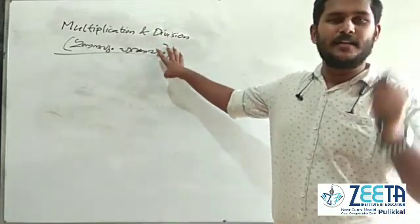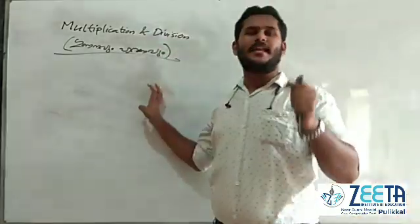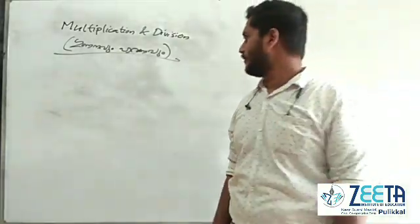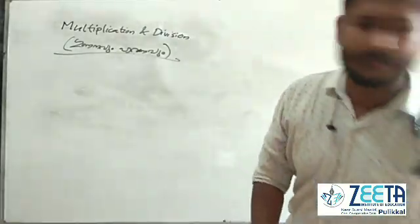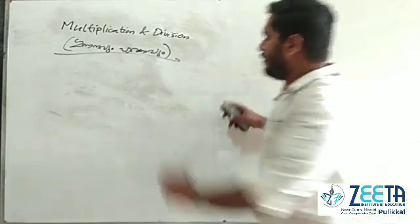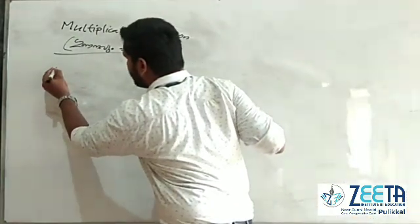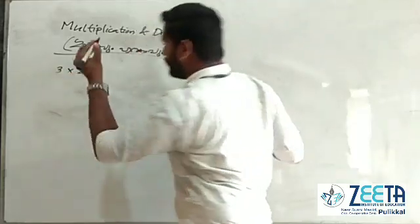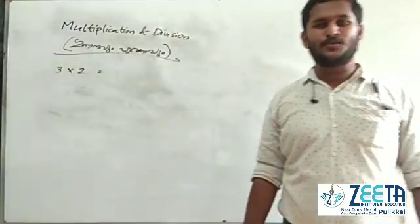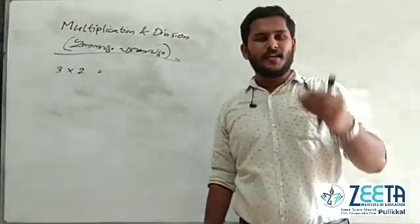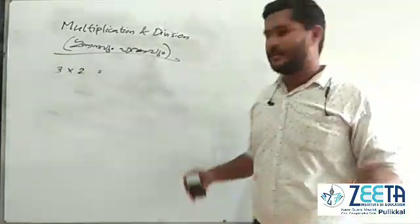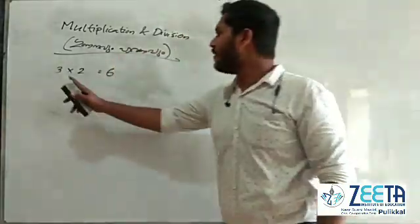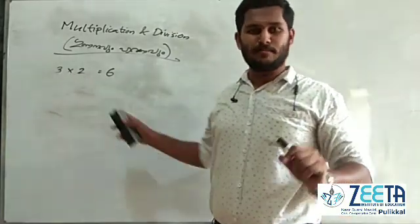Multiplication, division. Positive numbers and negative numbers in multiplication and division. We have three into two. Three into two — the answer is six. This is the positive numbers.